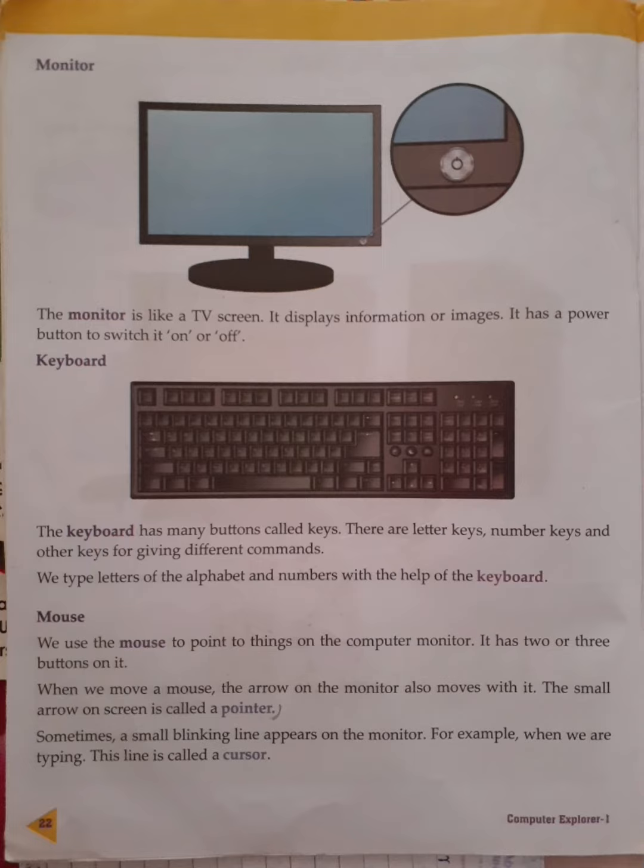Then mouse. Mouse is used to point things on the computer monitor. This mouse has two buttons with a scroll wheel. When we move the mouse, the arrow on the screen also moves with us. The small arrow on the screen is called a pointer.